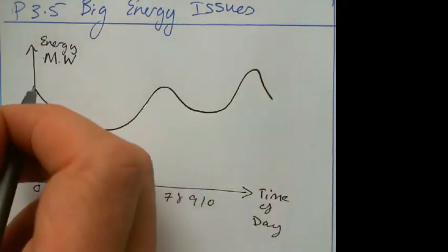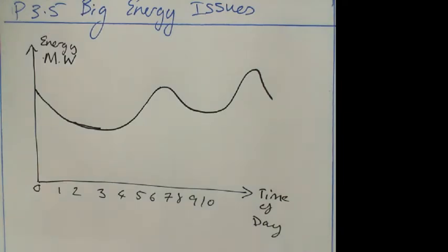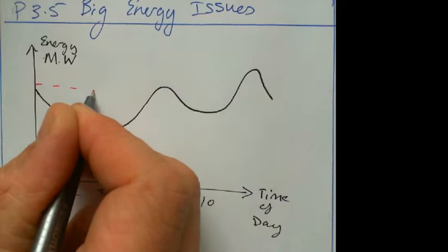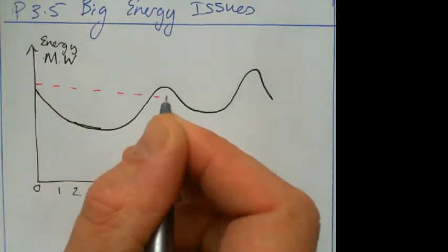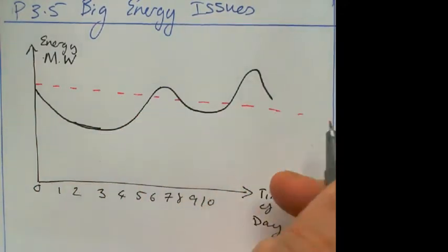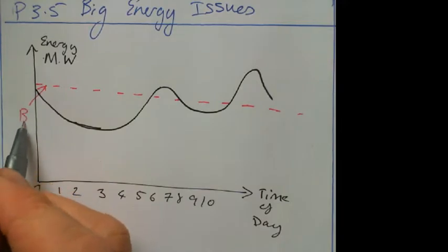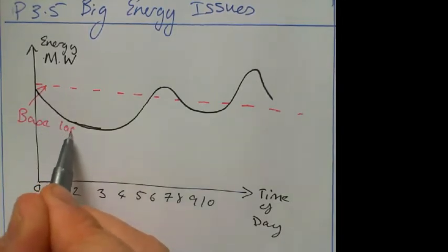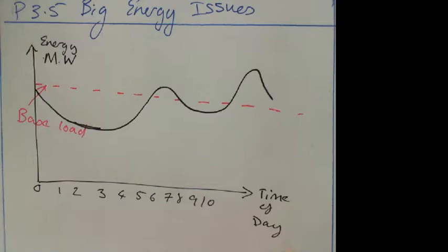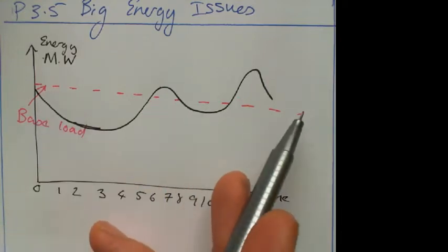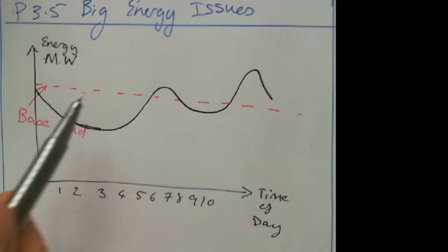Now what you've got is you've got something called a base load which is about there, and that's how much energy you are making at all times. This is known as the base load. And if you think about it, if you've got a nuclear power station you can't stop it from making electricity. If you've got a coal or a gas or an oil one, they take time to heat up and cool down, so it's best to keep them running at a certain rate. That certain rate is whatever you want it to be, but it tends to be linked to your demand curve.